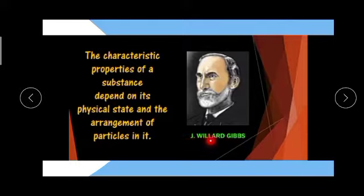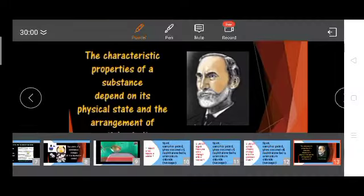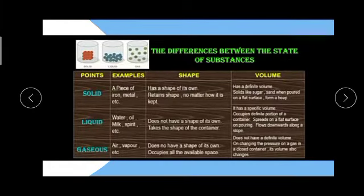Physical state and arrangement of particles in a substance depend on its properties. Now we discussed earlier the points of solid. Examples: piece of iron, metal, etc. Shape: it has a shape of its own, retains shape no matter how it is kept.